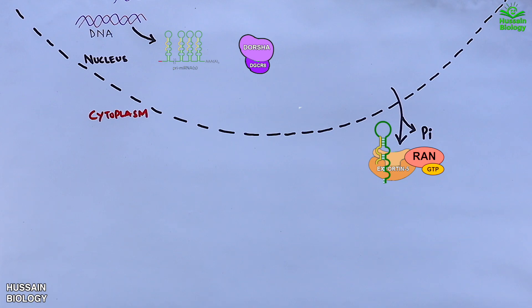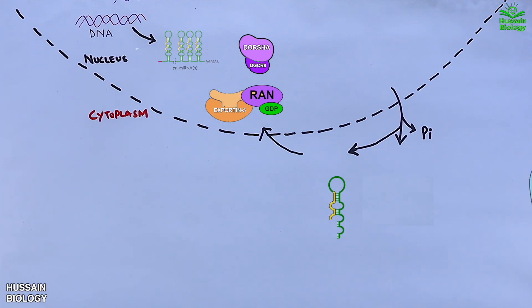Now we see within the cytoplasm we have the precursor miRNA. This precursor miRNA is unloaded and Exportin-5 gets back to the nucleus. Within the cytoplasm, the DICER comes in and binds with it.